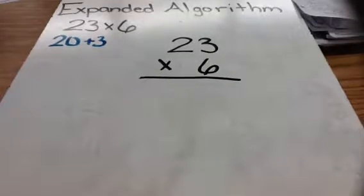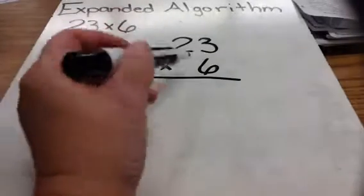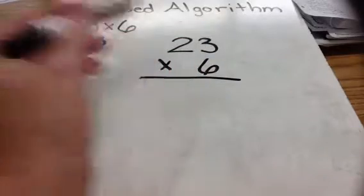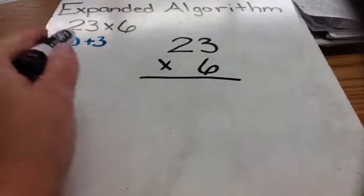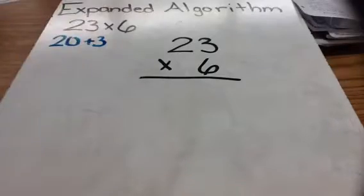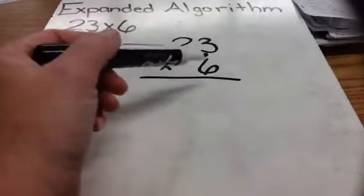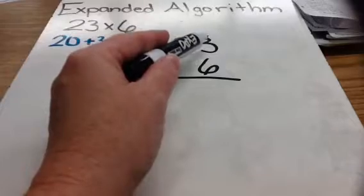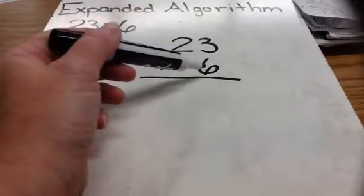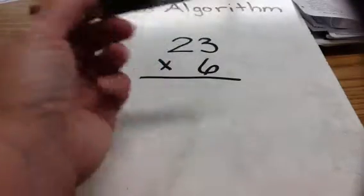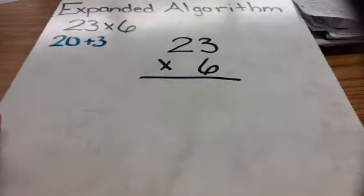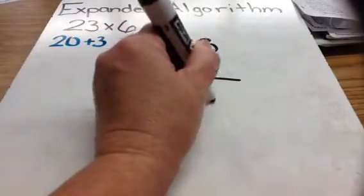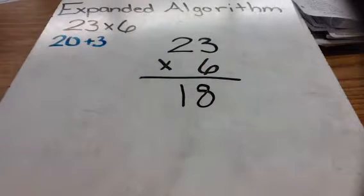The next step would be to multiply the 6 by only the ones of 23. I have this number in my head — I know that the ones section of 23 is just 3. There are 3 ones. So, I'm going to multiply 6 by 3 ones. I know that 6 times 3 is 18, so I'll write that below the line.